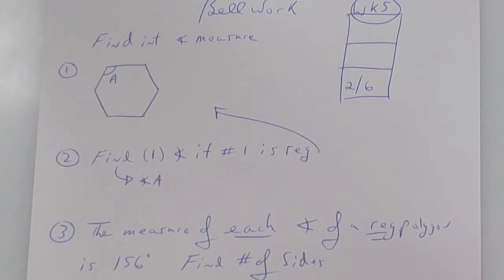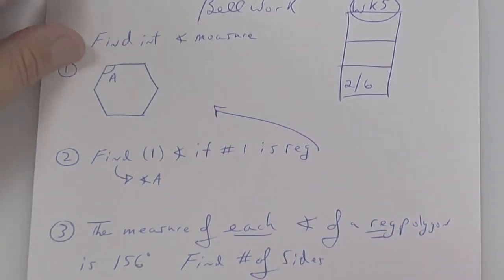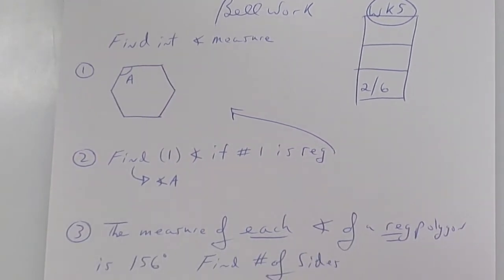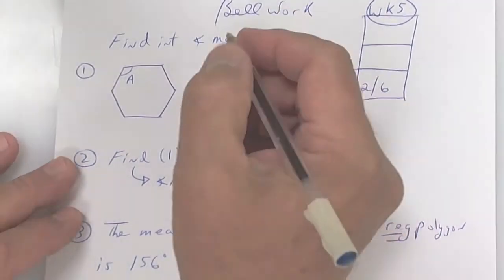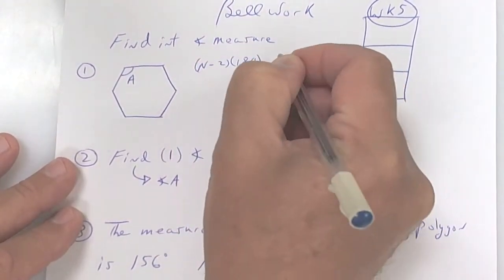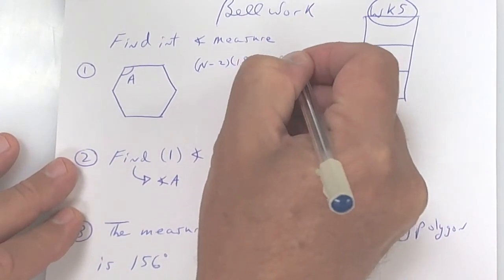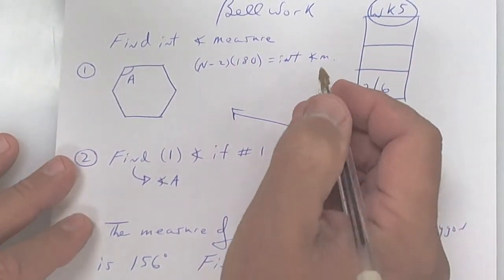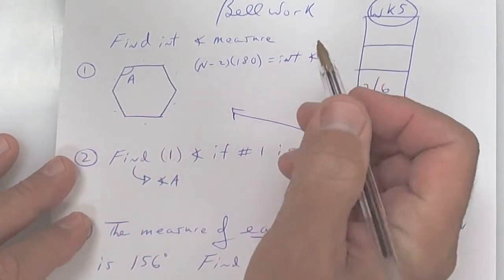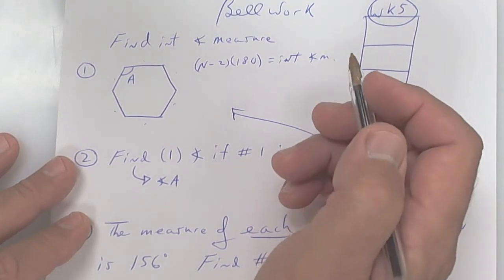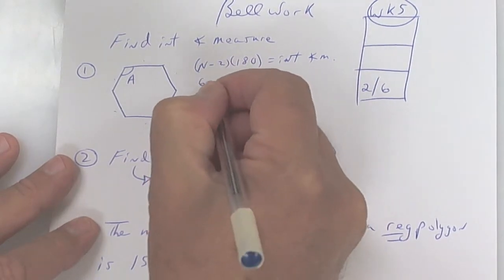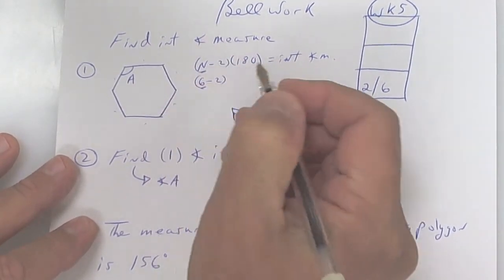Let's take a look at today's bell work. We're talking about interior angle measure — find the total angle measure using the formula (n - 2) × 180. First, figure out how many sides: 1, 2, 3, 4, 5, 6 — if it has 6 sides, do you know what it's called? Hexagon — correct. So that's going to be 6 minus 2, where n represents the number of sides.